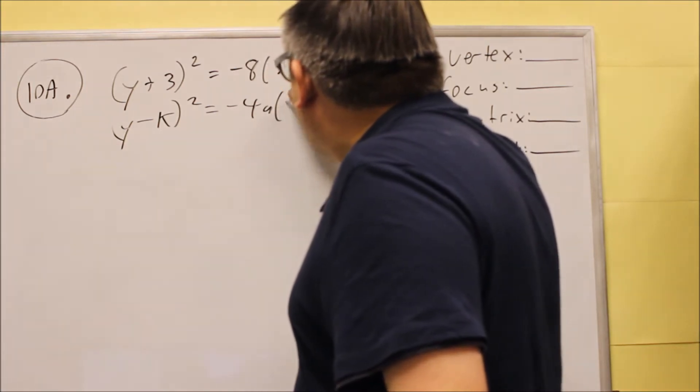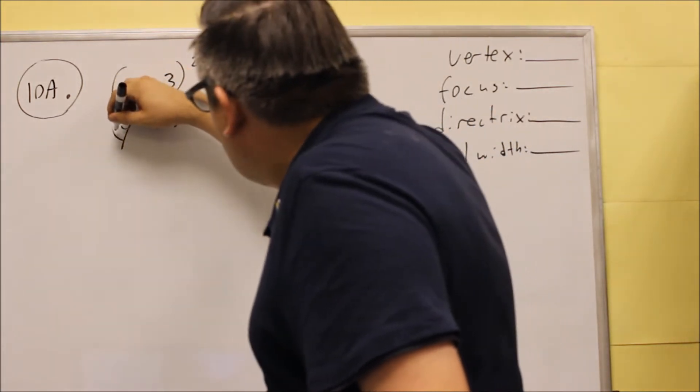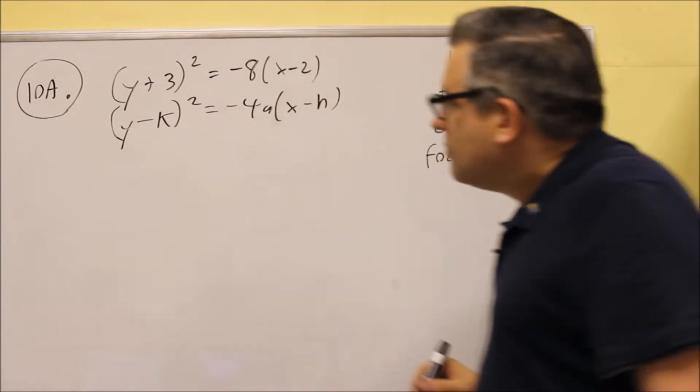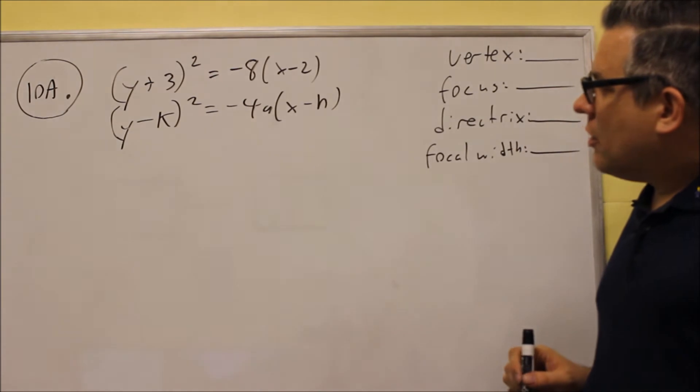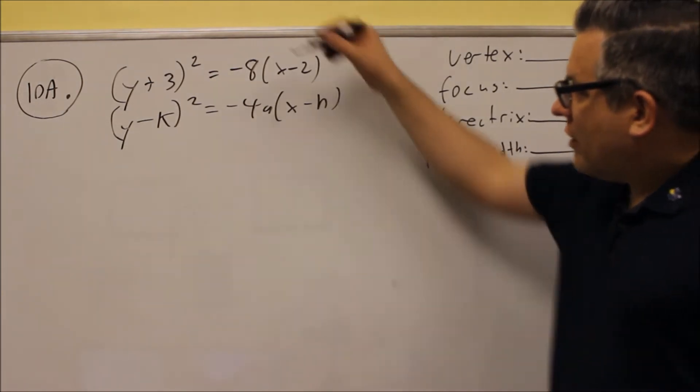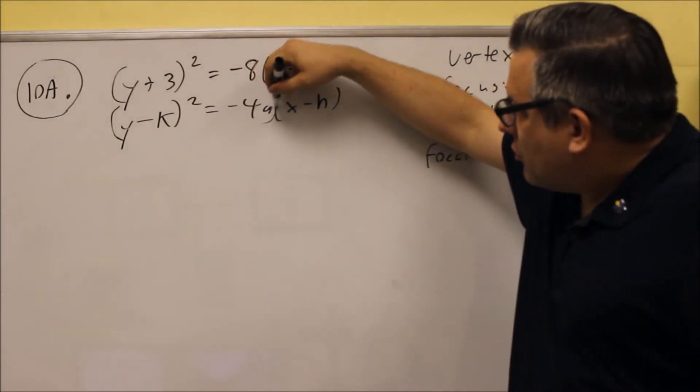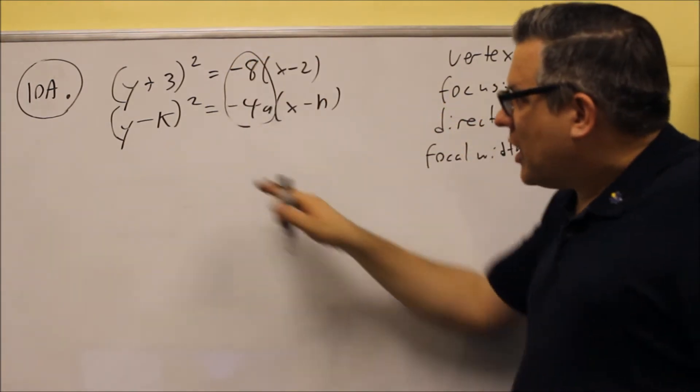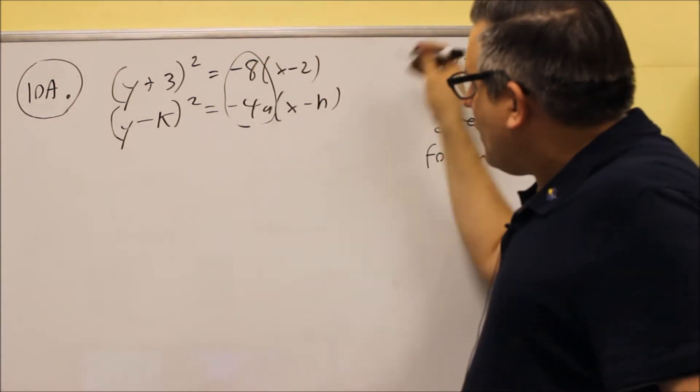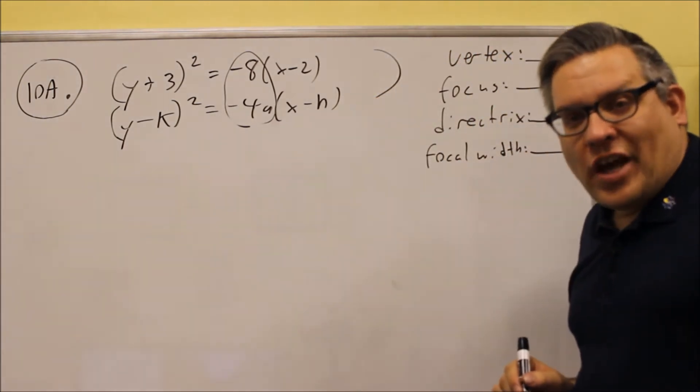So I have 4a and then x minus h. So with here, since it matches, what that's going to tell me is that these values also must be set equal to each other. So this model, first of all, says that I have a parabola that's going to open up to the left. So the model tells me that's what it will look like.